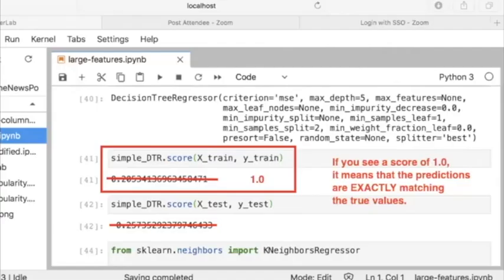If you fit an sklearn regressor or estimator and you get a score of exactly 1.0, that means the predictions are exactly matching the true value. That could be great or it could be overfitting on the training set.